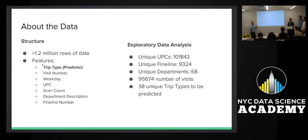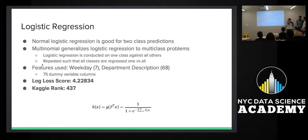For the sake of simplicity, and since this is my first time really doing a serious Kaggle competition, I just looked at weekday and department description. When you create dummy variables for those, because there are only seven weekdays and only 68 unique departments, that resulted in 75 dummy variable columns. I ran the model, and with a little bit of finagling, I got it so that it only took about two minutes for the code to run. I submitted it to Kaggle, got a log loss score of 4.22. My Kaggle rank was initially 4.20, and then it dropped down to 4.37. In the future, I might try to do a little bit more feature engineering. Maybe I would have added another column and maybe another computer.